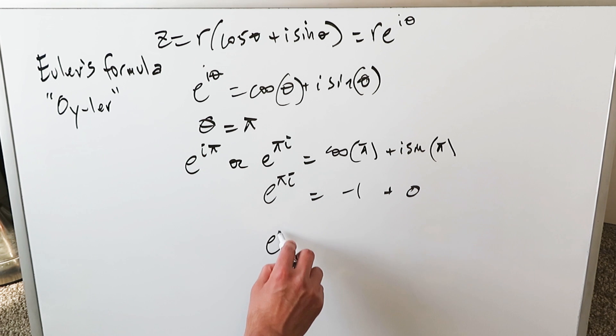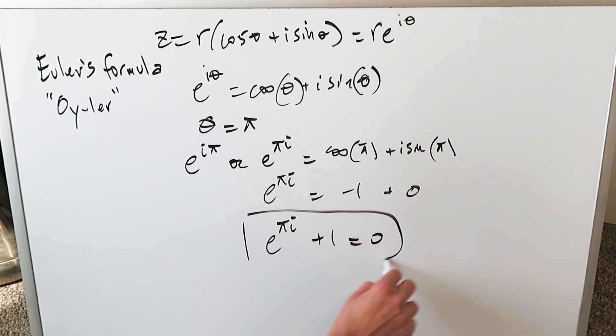If you push the minus one onto the other side, on your left hand side you have E to the pi i plus one equals zero and you end up arriving at that very famous equation.